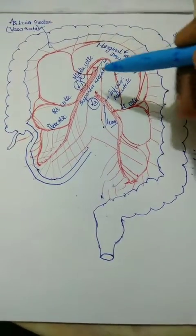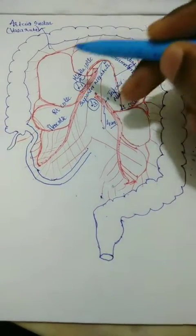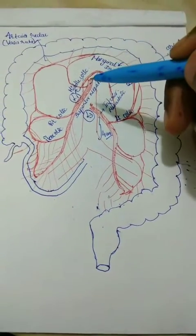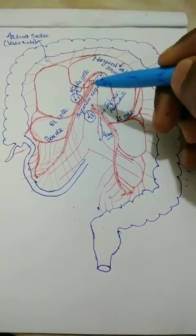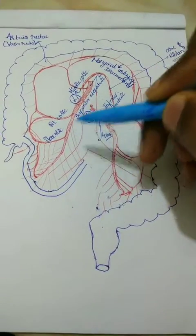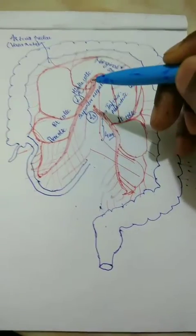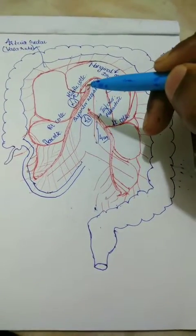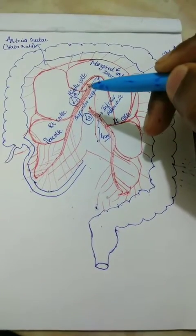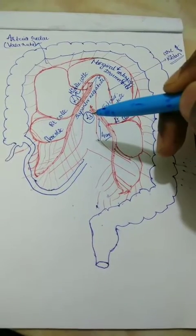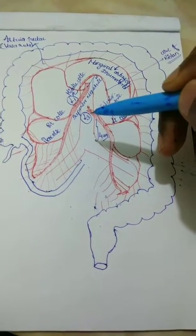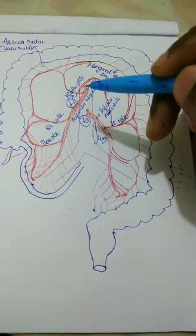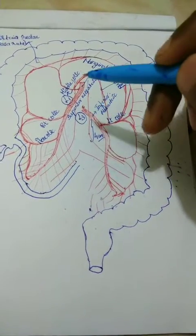Here I am going to explain blood supply to the colon. The blood supply to the colon is mainly by the superior mesenteric and inferior mesenteric artery. The superior mesenteric artery arises from the abdominal aorta at the level of L1, and the inferior mesenteric artery arises from the abdominal aorta at the level of L3. Both are anterior branches and both are unpaired arteries.